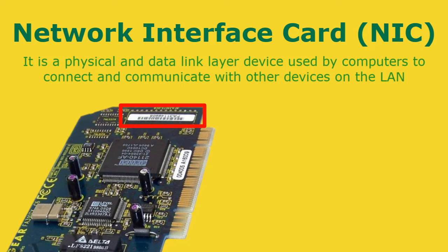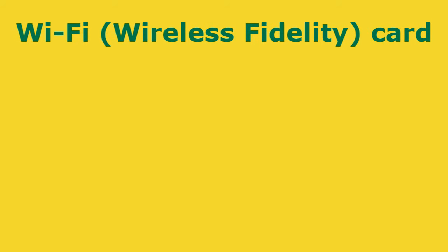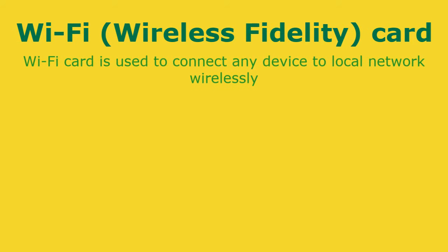The NIC manufacturer assigns a unique physical address to each NIC card. This physical address is called a MAC address, or Media Access Control address. The MAC address is a 6-byte unique hardware identification number that uniquely identifies each device on a network. Because there are millions of network cable devices in existence, the MAC address helps to distinguish them on the network.